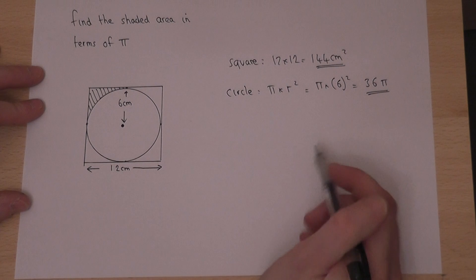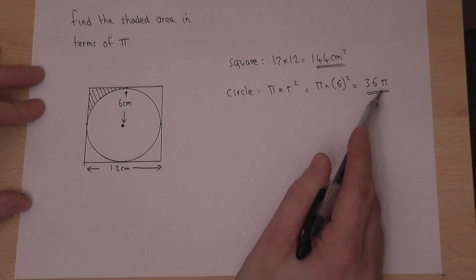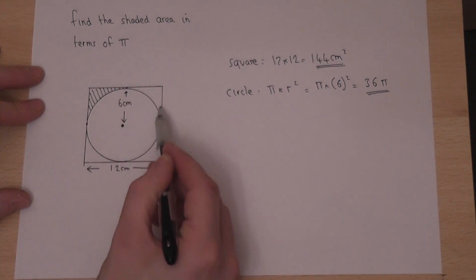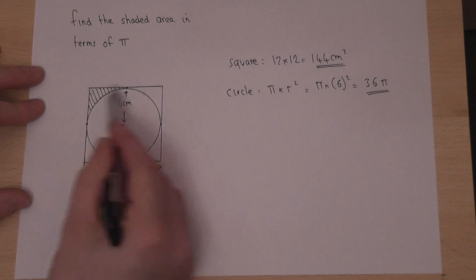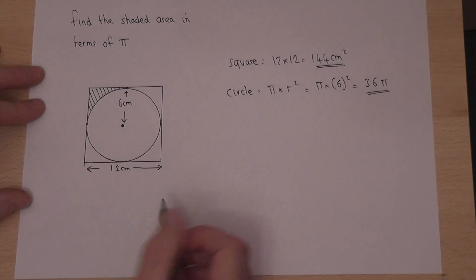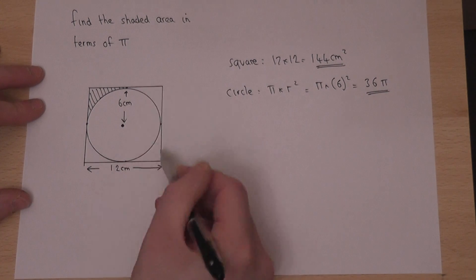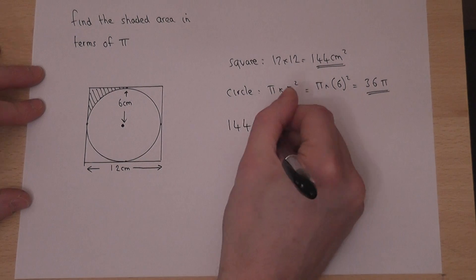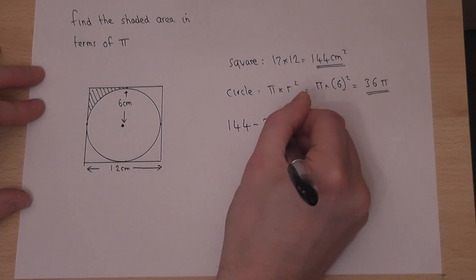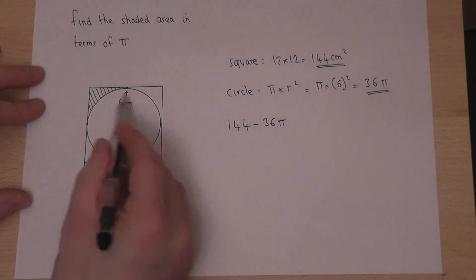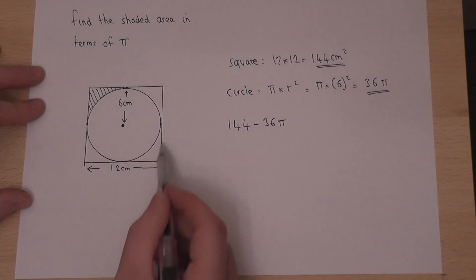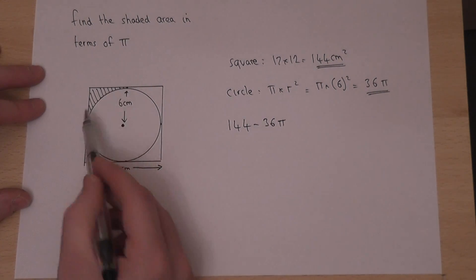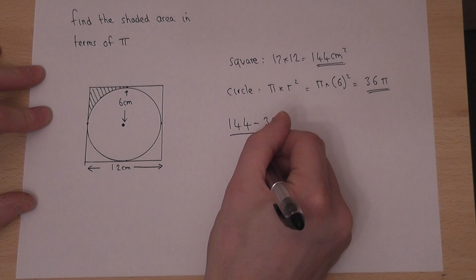So that's the area of the circle in terms of pi. From this I can work out the leftover corners by doing square take away circle. That area plus that area plus that area plus that area is 144 take away 36 pi — those are the four leftover corners. To find one of the corners I must divide that answer by 4.